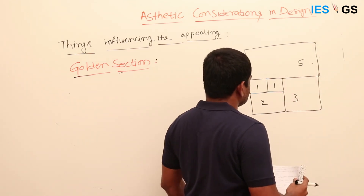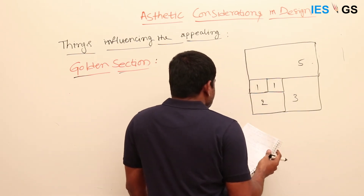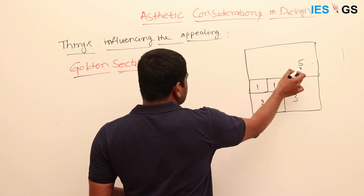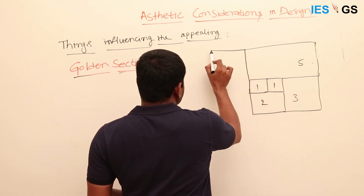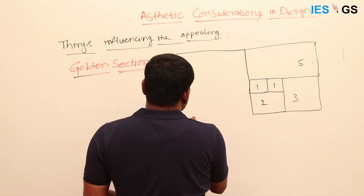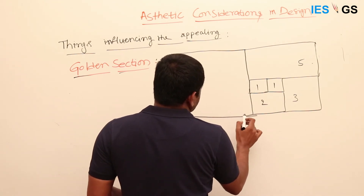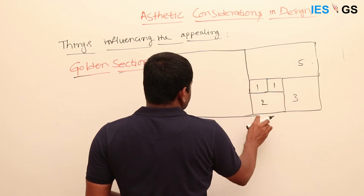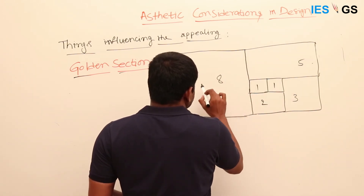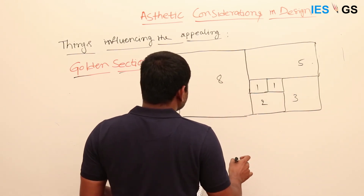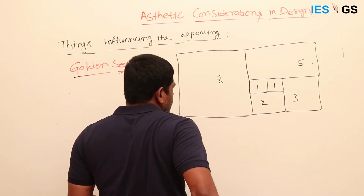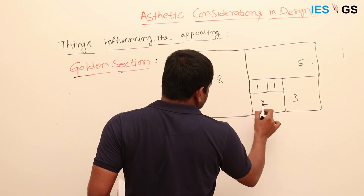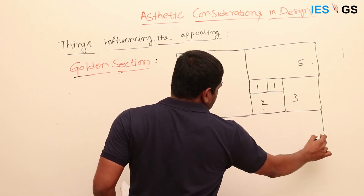Continuing: 3 plus 2 is 5, and 5 plus 3 is 8 — all squares. Then 8 plus 5 is 13. So we now have squares of sizes 1, 1, 2, 3, 5, 8, and 13 arranged together.